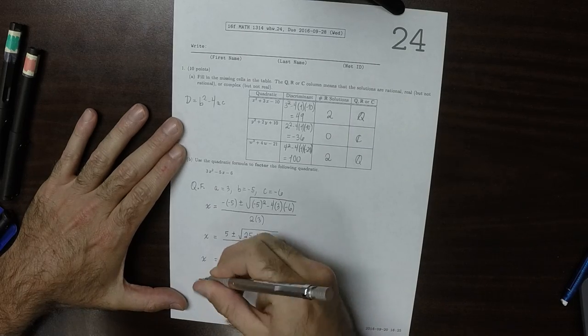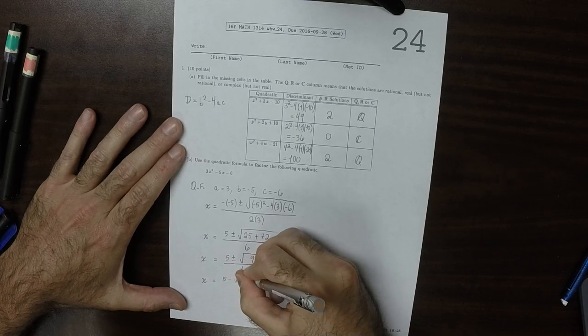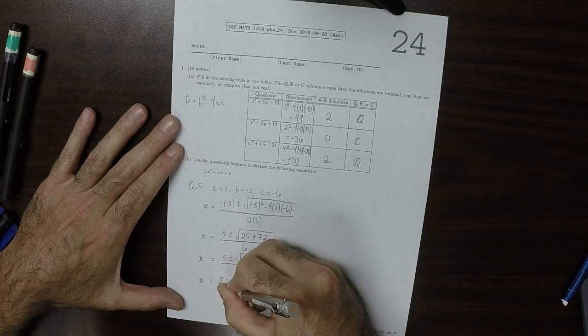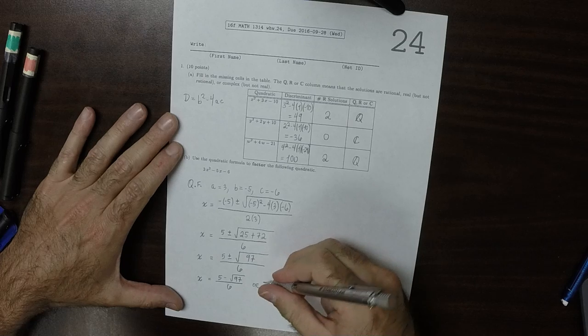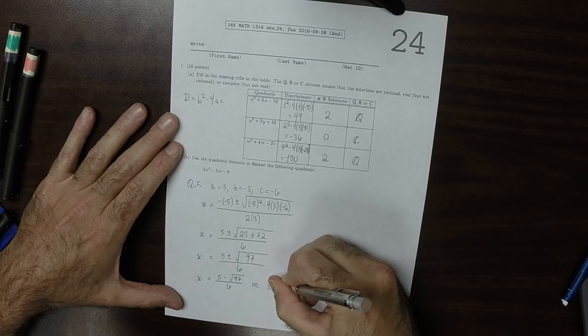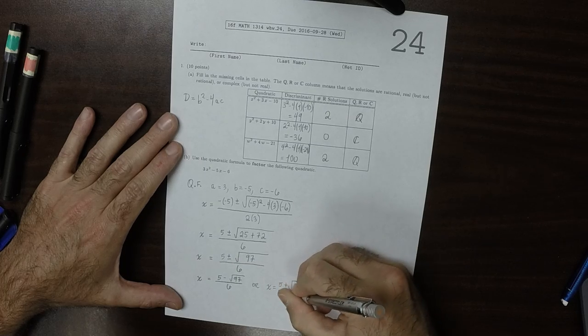So the two different solutions are, one of them is 5 minus the square root of 97 divided by 6. The other is x is 5 plus the square root of 97 over 6.